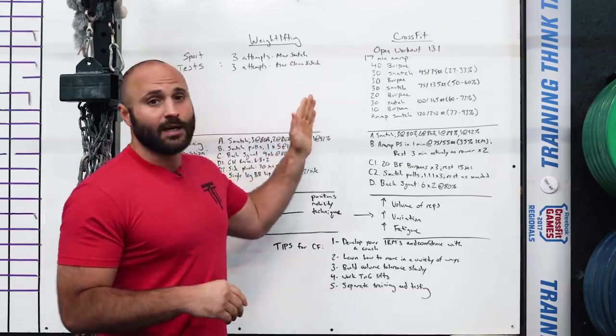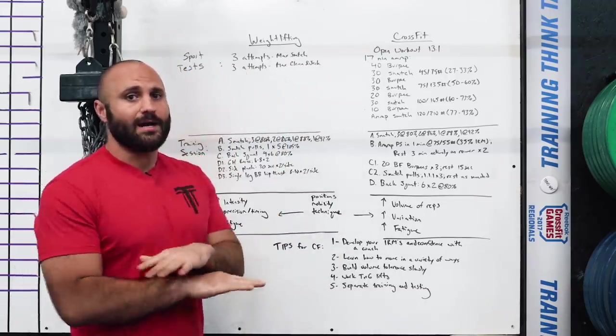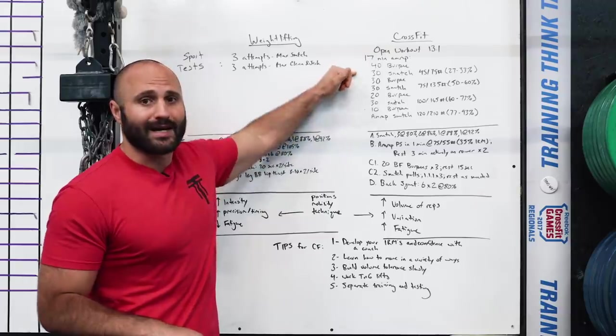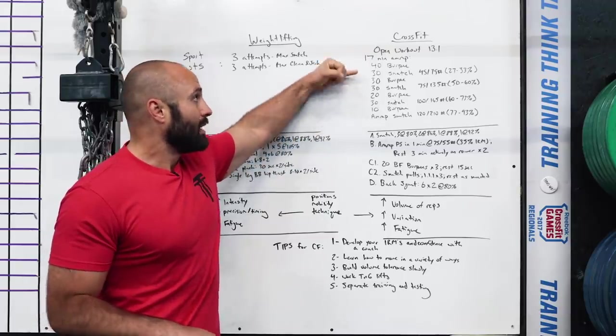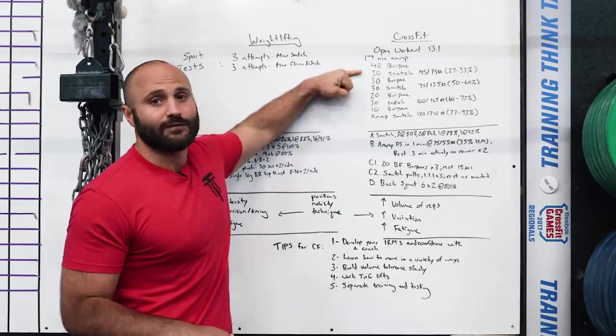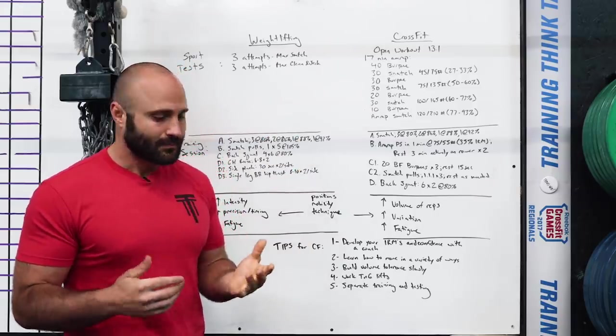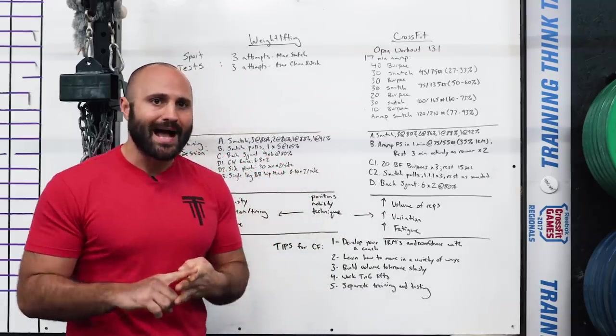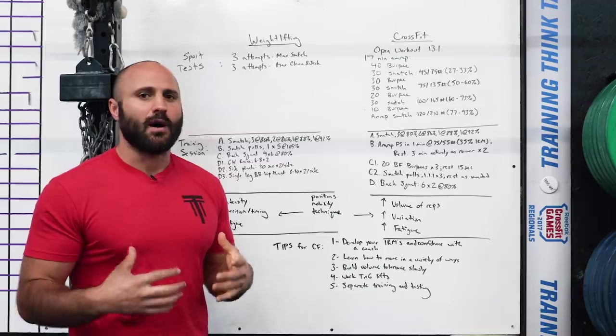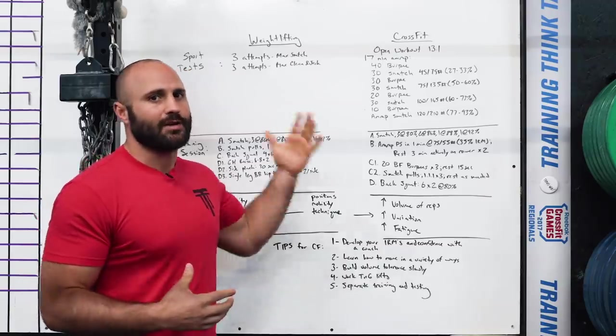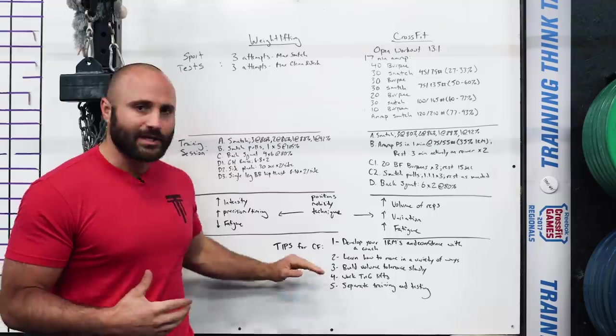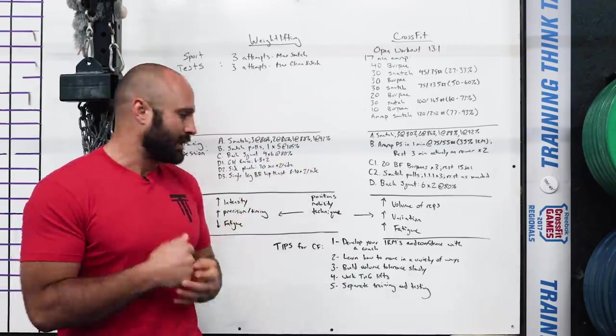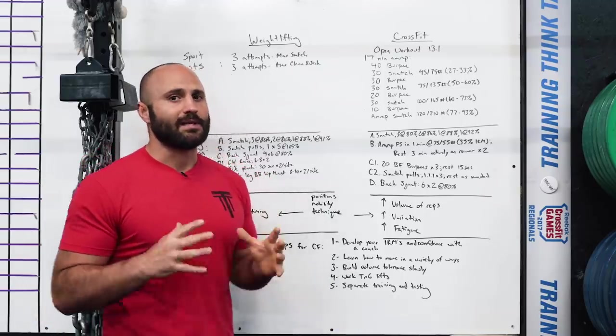Tip number four, work touch and go lifts. In weightlifting, you snatch, you drop it from overhead, and you're done. In CrossFit, in a test like this, you're not going to do singles for this whole test if you want to excel. You might be doing three sets of 10 unbroken or two sets of 15 unbroken where you're hanging onto the bar the whole time. That's going to challenge your grip, your hamstrings, your shoulders, your lower back in a much different way because the eccentric volume of lifting is so much higher than if you're just doing one rep and dropping it from the top. So make sure that you work touch and goes as part of your training program if you're trying to excel in weightlifting and CrossFit.